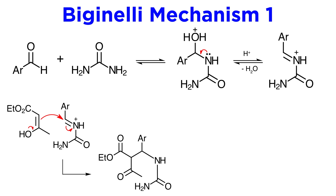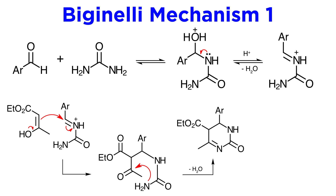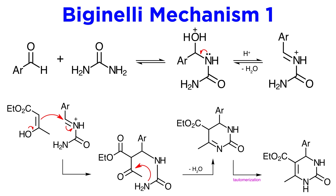This yields an adduct that quickly reacts by intramolecular imine formation — which we can also call a dehydration — in order to form the ring. This final step is highly favored kinetically due to the intramolecular nature of the two reacting partners. The initially formed acyl imine tautomerizes quickly to give the expected product, in which the double bond enjoys conjugation with the ester group and is therefore more stable. And that's one possibility for this mechanism.